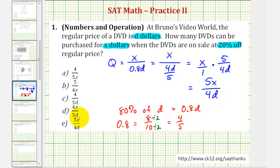So looking at our choices, five X divided by four D is choice E. So our answer is E. I hope you found this explanation helpful.